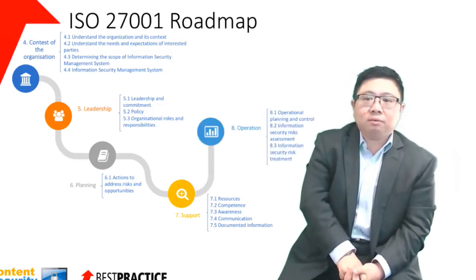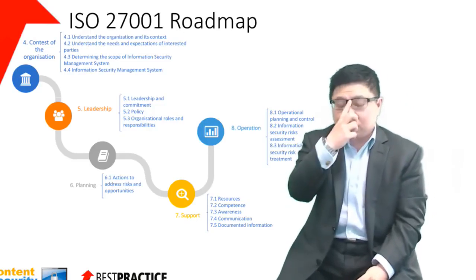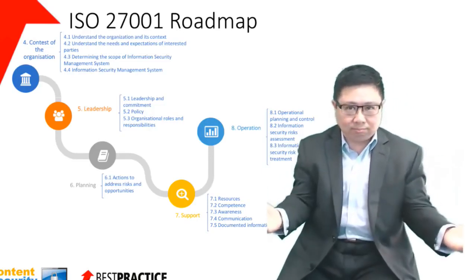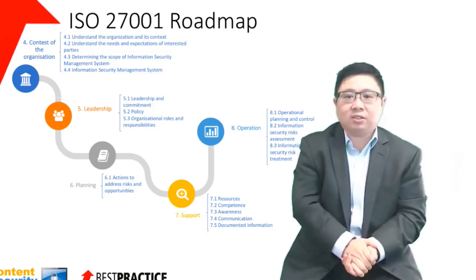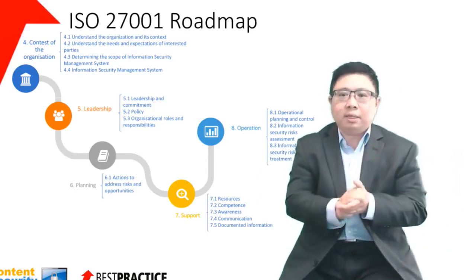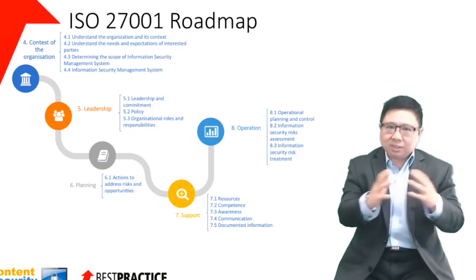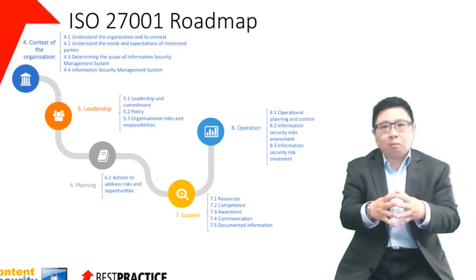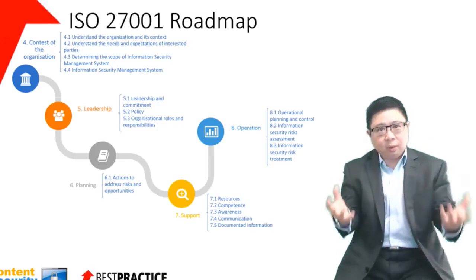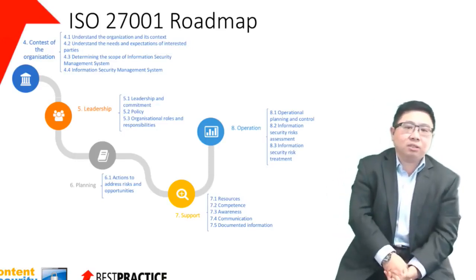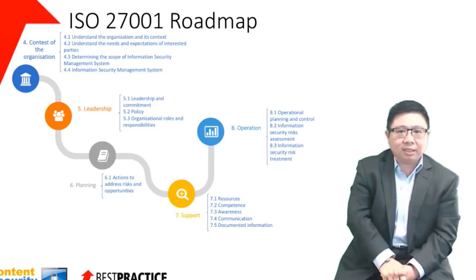Finally, the last part is to actually operationalize the whole process. This initial phase of the roadmap is to first do the setup of expectations, then to plan out what frameworks you need to have in place, and then the next step is to operationalize the implementation itself.